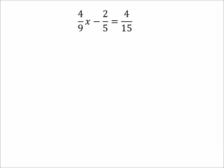So on this one, 45 is going to have to do it. I'm going to have to multiply the 9 by 5, which means I'll have to multiply the 4 by 5 as well. So that gives me 20 over 45x.